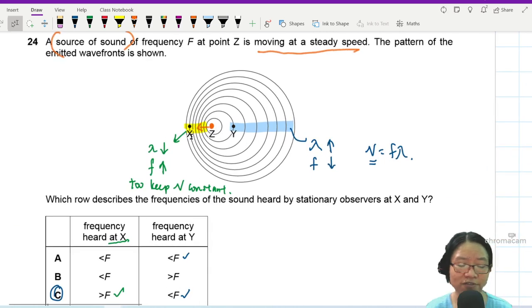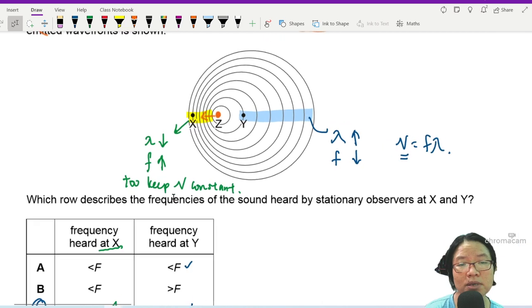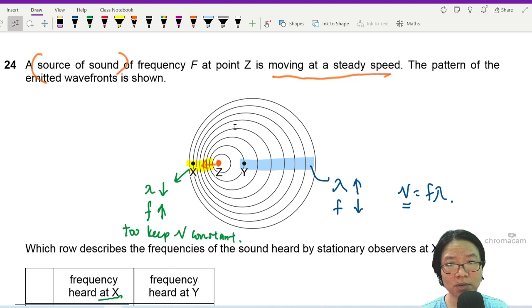In this question, if you memorize the equation but you don't know the theory behind the equation, then you probably may struggle a bit. Because they also didn't tell you which direction the source is moving.